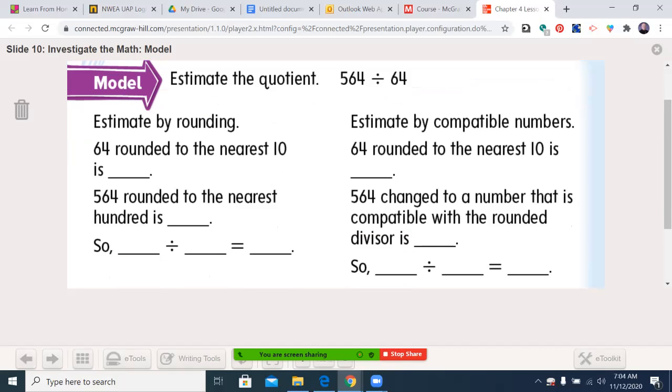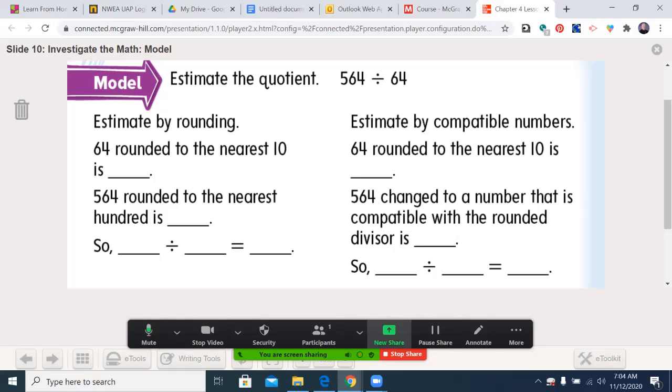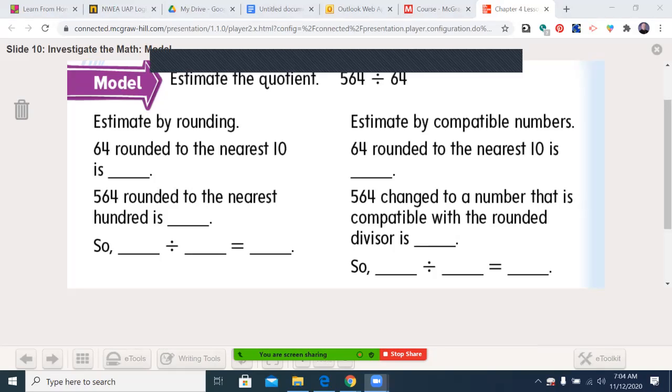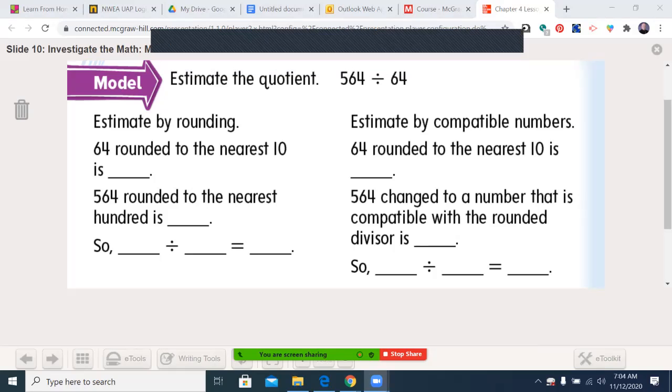So let's look at this one. Estimate the quotient. 564 divided by 64. When written in this way, the 564 is a number that would normally be underneath as the dividend, and 64 is the divisor, the number that would be on the outside. Let me grab my annotation tool and slide this up here. So we're going to look at two different ways of doing this.